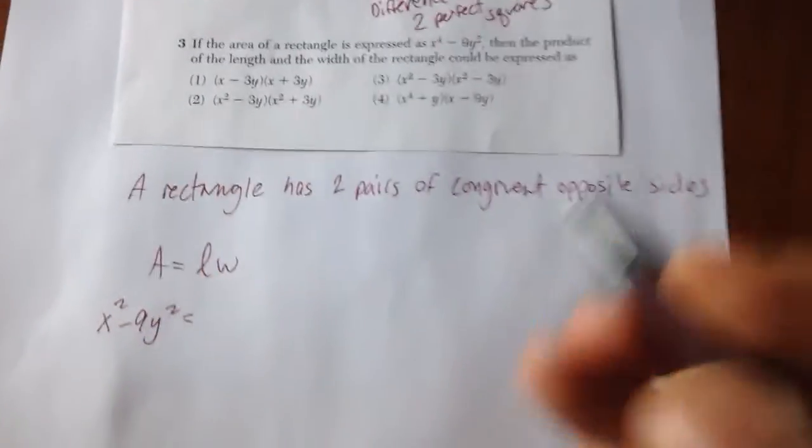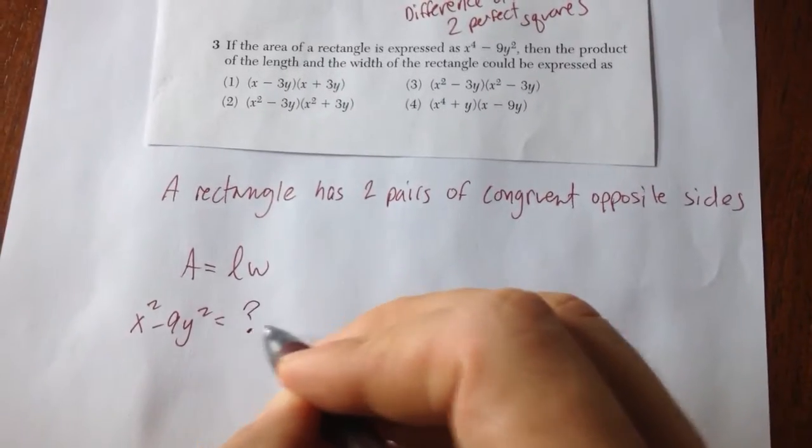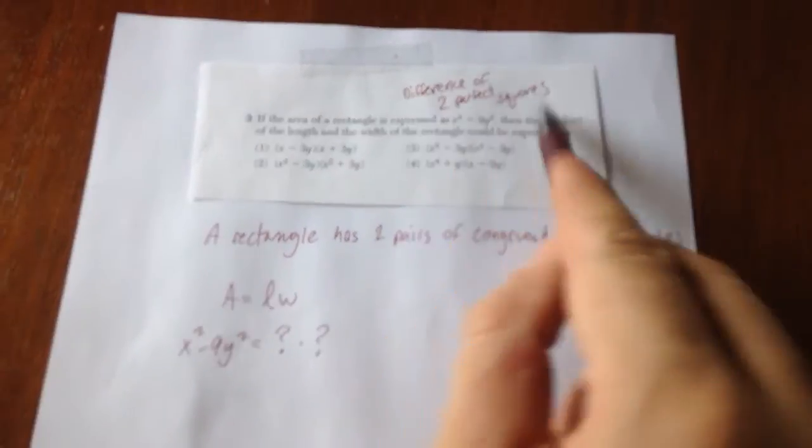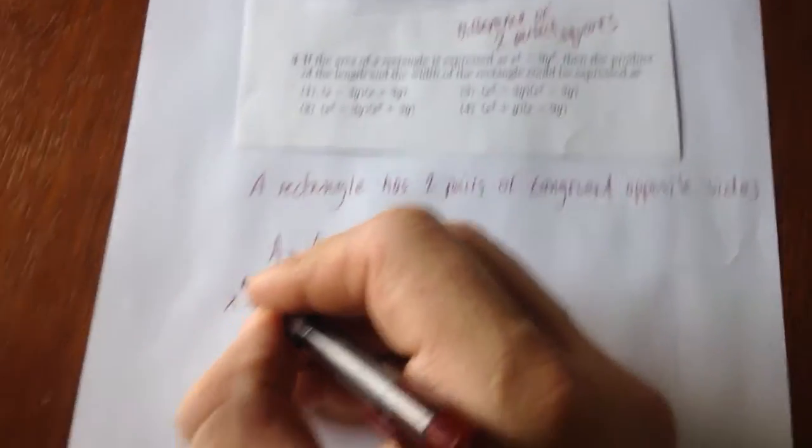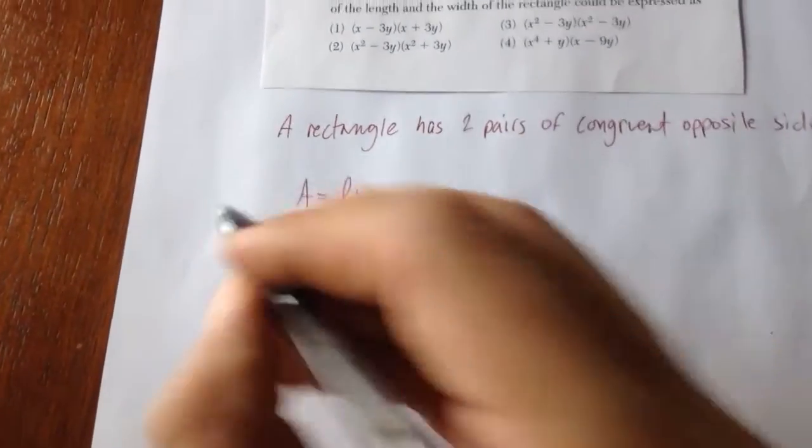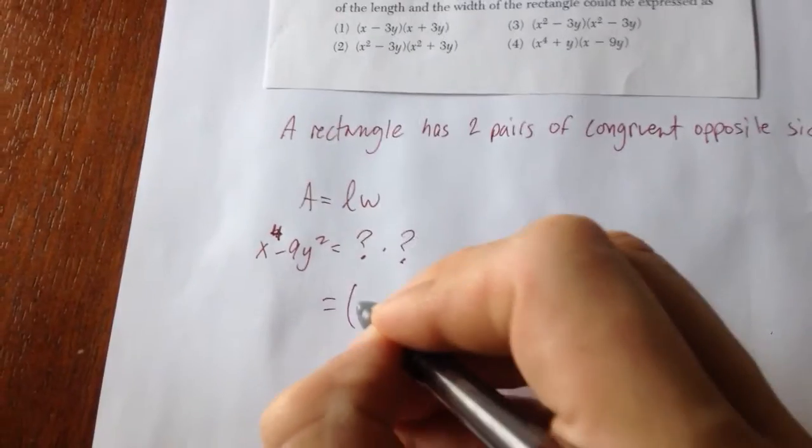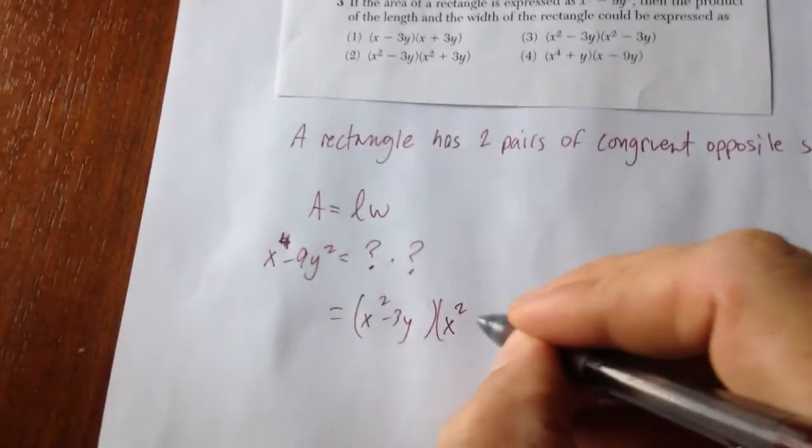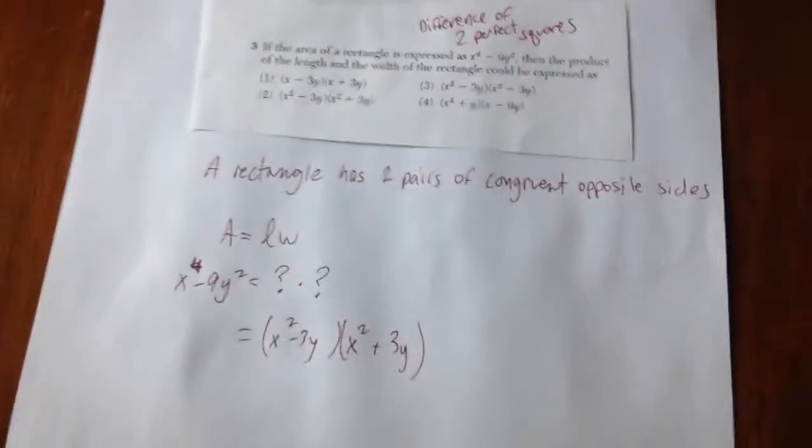Minus nine y squared. So what they're figuring out, they're asking you is what times what gives you this binomial? So essentially this is just the difference of two perfect squares. This should be x to the fourth. So they're basically saying x squared minus three y and x squared plus three y.